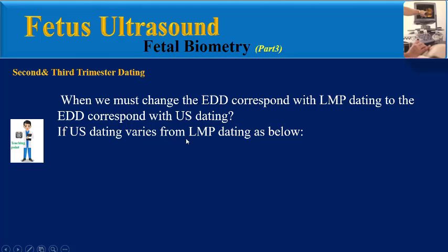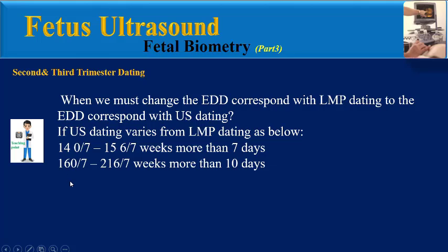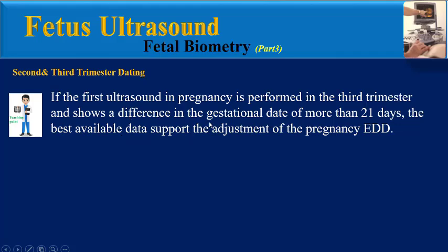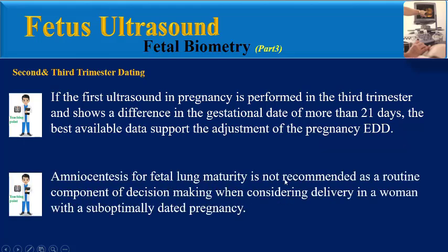If ultrasound dating varies from LMP dating, we must change the EDD in the following cases: between the beginning of 14 and the end of 15 weeks gestation — more than 7 days difference; between the beginning of 16 weeks and the end of 21 weeks — more than 10 days difference; between the beginning of 22 and the end of 27 weeks — more than 14 days difference. If the first ultrasound is performed in the third trimester and shows a difference of more than 21 days, the best available data supports adjustment of the EDD. Amniocentesis for fetal lung maturity is not recommended as a routine component of decision-making when considering delivery in a woman with a sub-optimally dated pregnancy.